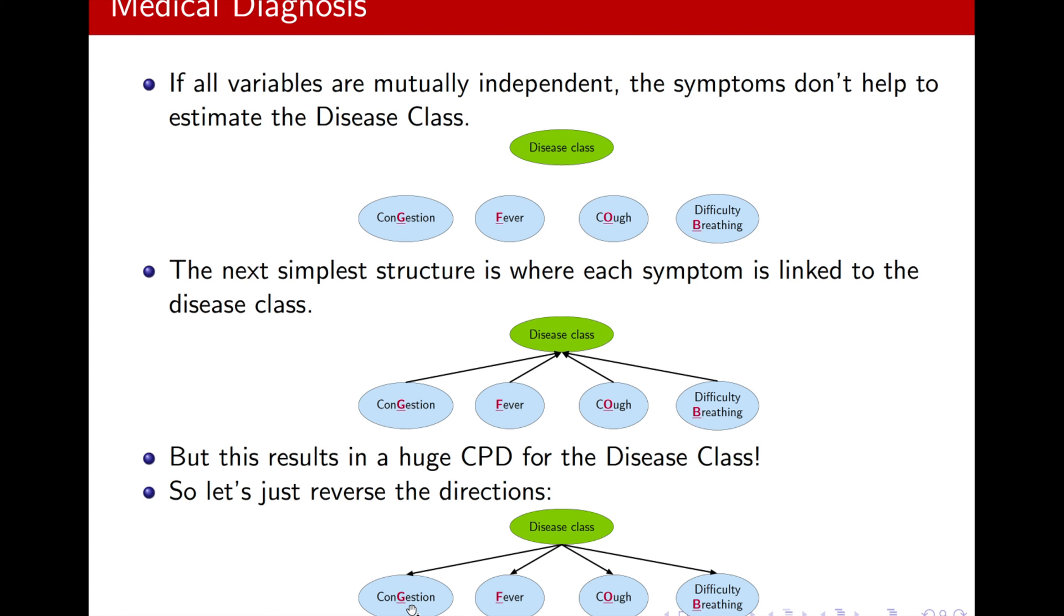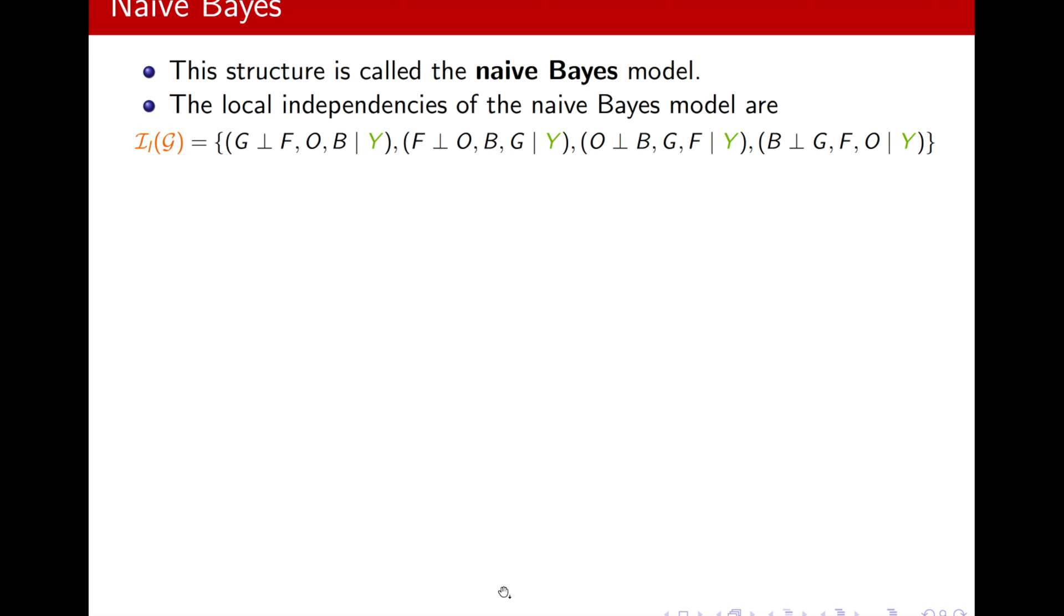So look, for example, congestion will be d-separated from this group of symptoms if it's conditioned on the disease class. It's blocking it, right? Okay, so I will have these local independencies, and namely, symptoms are mutually independent given disease class.